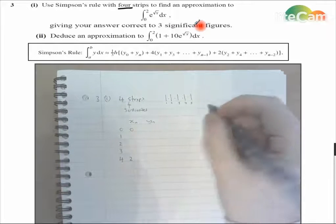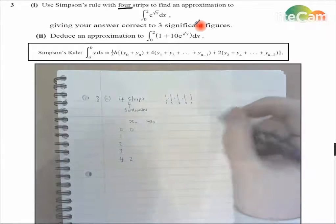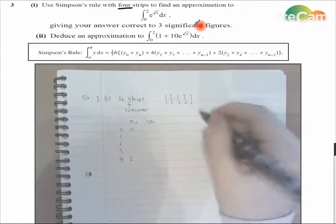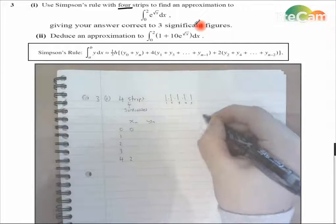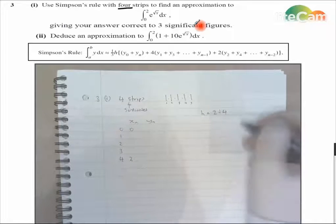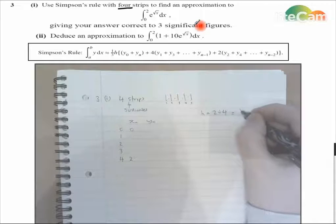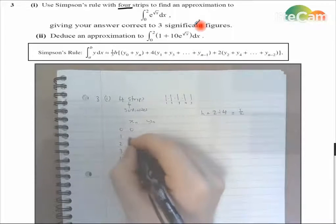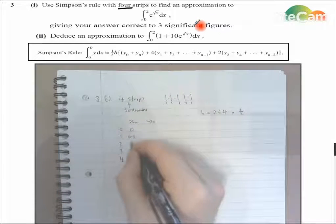So, we've got 4 strips, and we've got to go between 0 and 2. So h is going to be 2 divided by 4, 4 strips, which is a half. So these are going up in halves. So we've got 0.5, 1, 1.5.